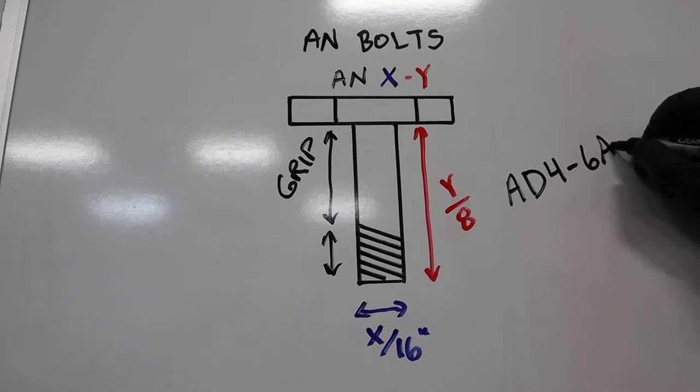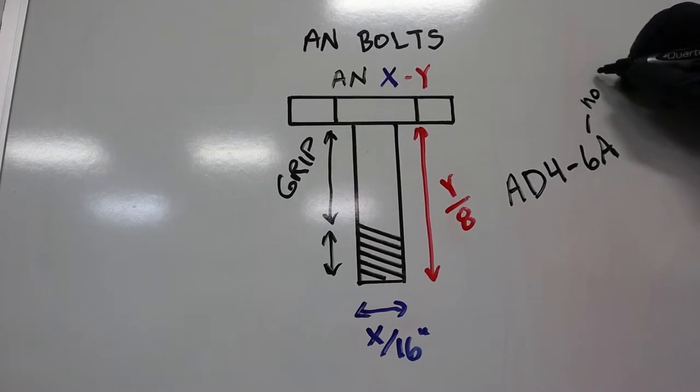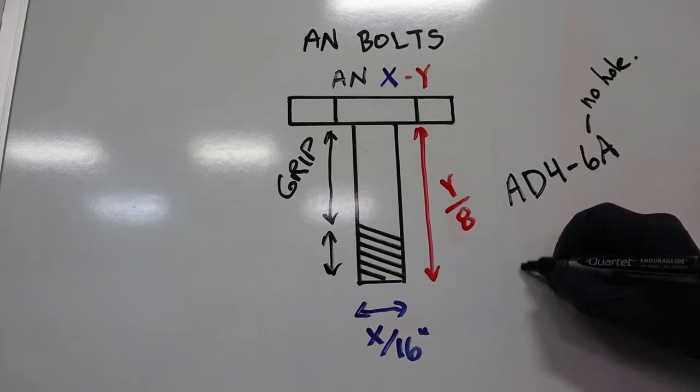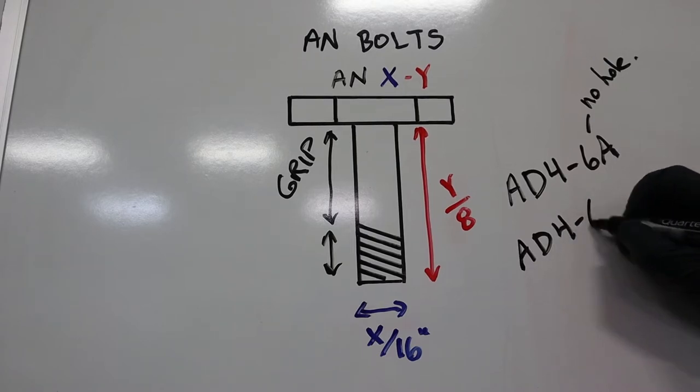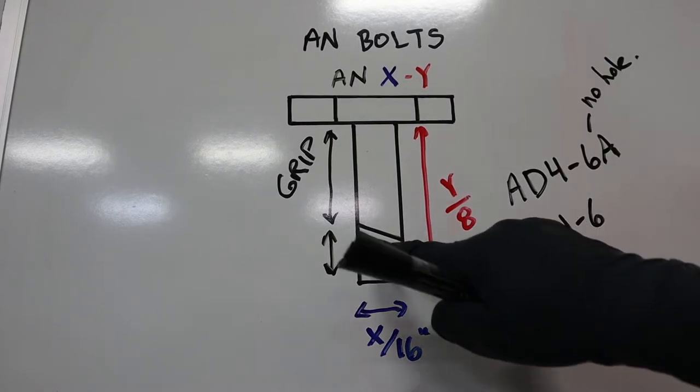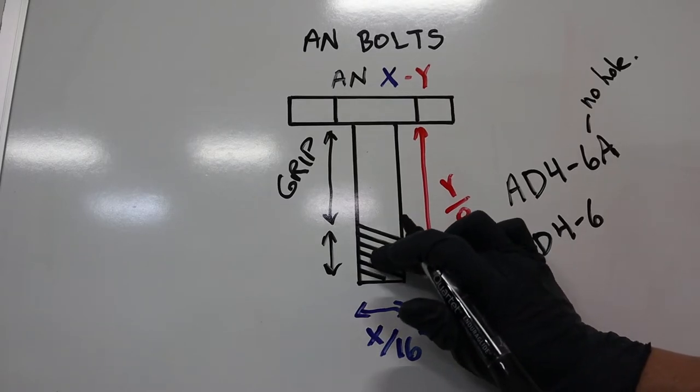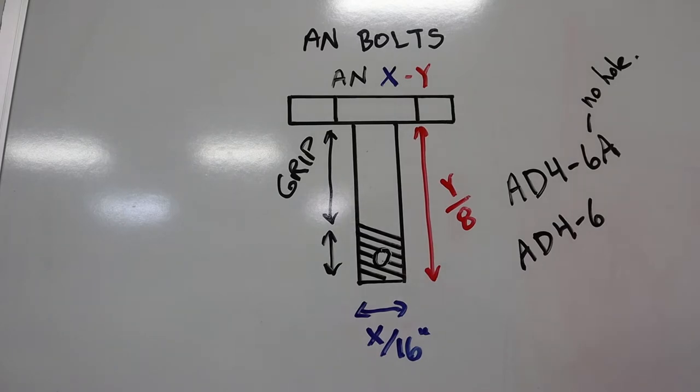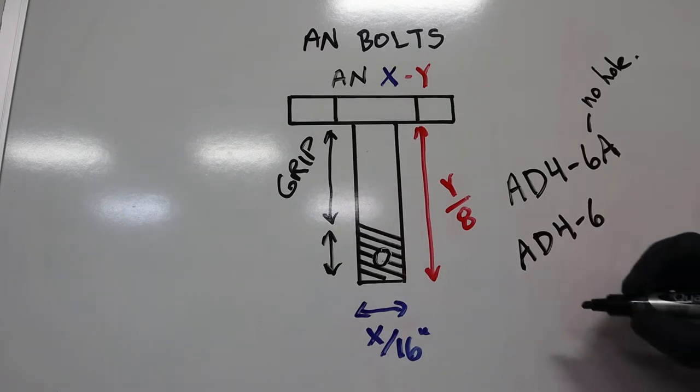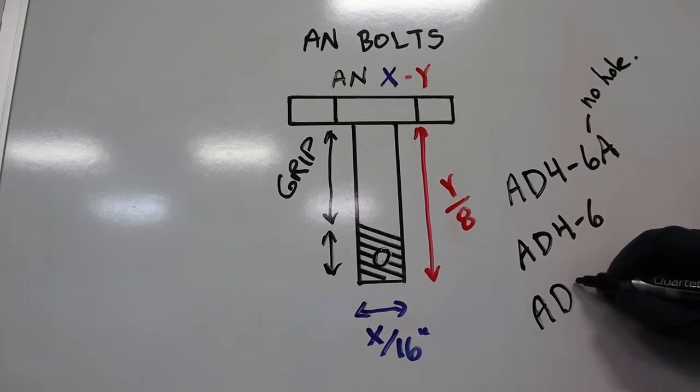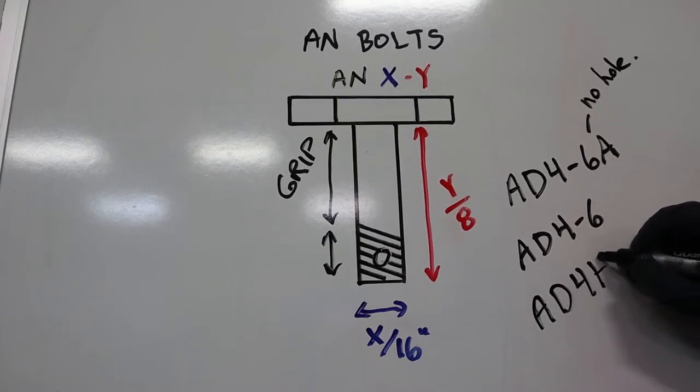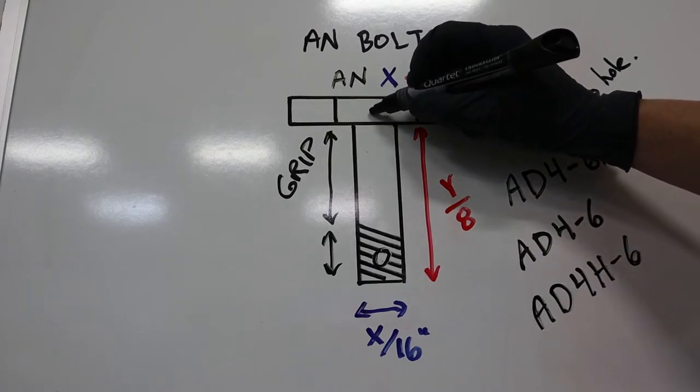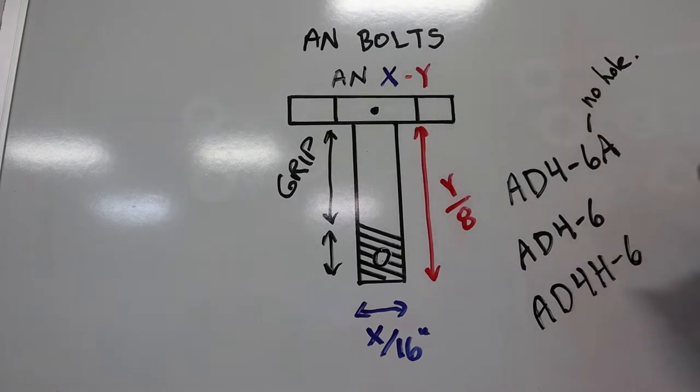So another designations we have, so 4-6A is going to be where there's no hole drilled in the end. So this is what you're going to be used most of the time, it's going to have an A designation at the end. If we only write 4-6, then there is a hole in the middle of the thread, which is going to be used for a castle nut and a cotter pin attachment. And if we have an H in the designation, so a 4-H-6 would then have a hole in the head, which would be used for safety wiring the bolt after it was torqued.